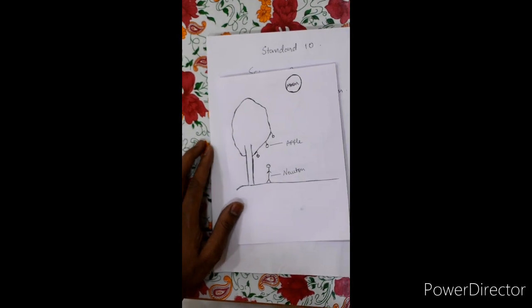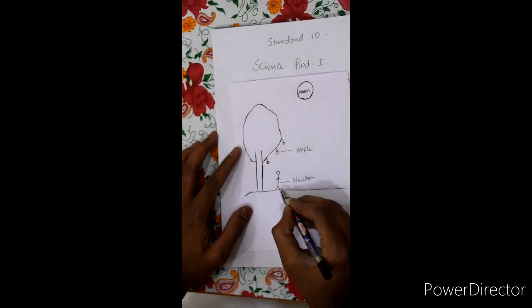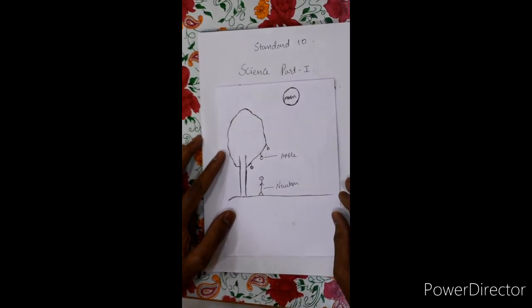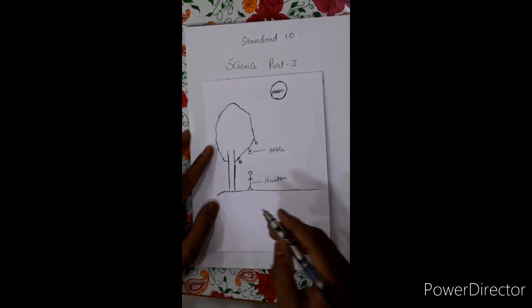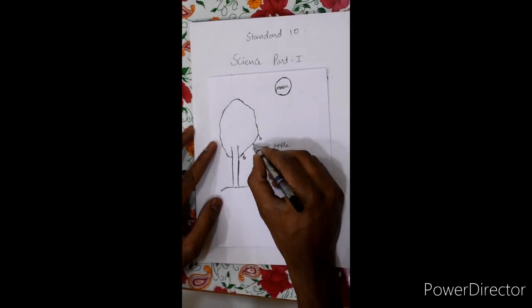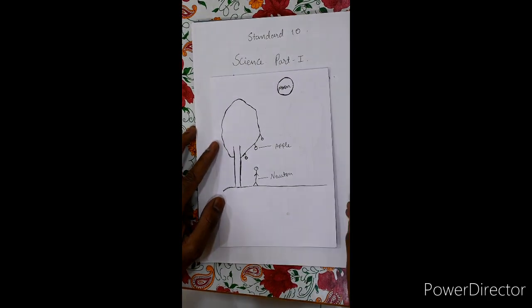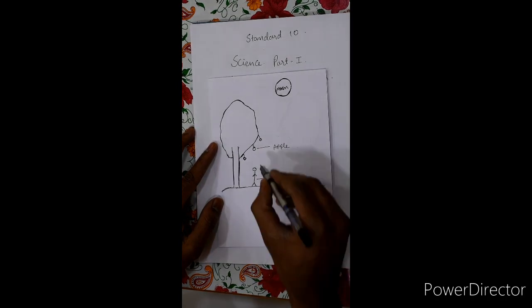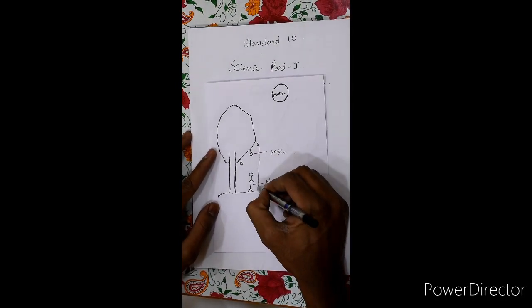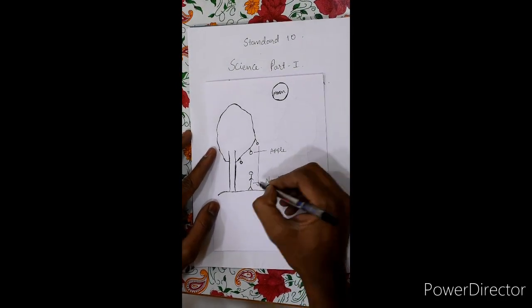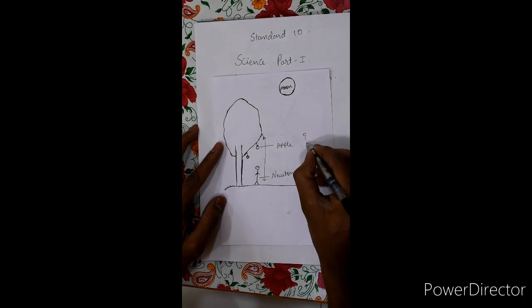The concept of gravitation was introduced by a scientist whose name is Isaac Newton. This scientist was sitting under an apple tree. When he was sitting under an apple tree, he noticed that one of the apples fell on the ground. As soon as the apple fell on the ground, Newton started to think.